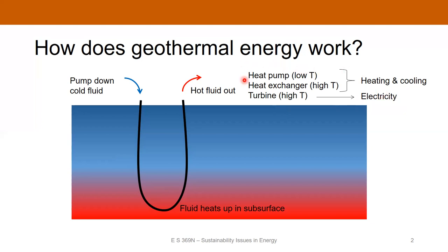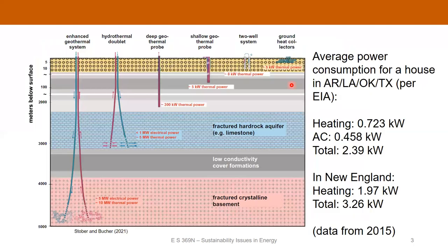What we're going to talk about today is the lower temperature end of things. Here's a diagram showing the different types of geothermal systems. Going from left to right, we go from very deep to very shallow systems. Enhanced geothermal systems drill very deeply — several kilometers below the surface — to get to very hot rock, and these can generate megawatts of power. Drilling to moderate depths of maybe a couple of kilometers gets to elevated temperatures with active fluid flow, also good for megawatts.